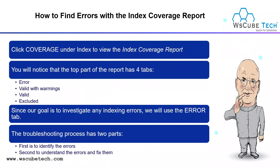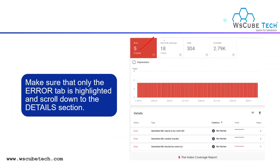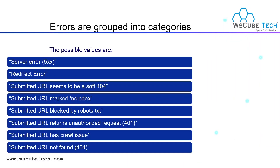The troubleshooting process has two parts. First is to identify the error, and second is to understand the error and fix it. In the report, we already know what the errors are and what the affected pages are. The second step is to understand the error — make sure that only the error tab is highlighted and scroll down to the detail section. The errors are grouped into categories.